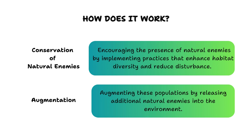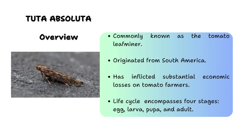All together, these methods provide effective, sustainable alternatives to chemical pesticides, promoting ecological balance and reducing environmental impact. On to the first pest of this series: Tuta absoluta. If you're a tomato farmer, you really need to listen to this. Tuta absoluta is commonly known as the tomato leaf miner or South American tomato moth, which originally came from South America and has become a significant threat to tomato farmers worldwide, with economic losses estimated at billions of dollars annually.